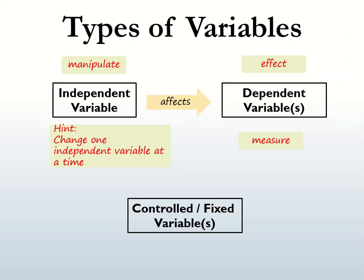Secondly, the measured effect is called the dependent variable. It is called dependent because it depends on the independent variable. If there is a direct link between the independent and dependent variables, then you may be uncovering a cause and effect relationship. There can be several dependent variables in an experiment because the independent variable can cause more than one effect. Thirdly, a controlled or fixed variable is a factor that does not receive any experimental treatment — it stays the same throughout the experiment, allowing us to better understand the relationship between the other variables being tested.